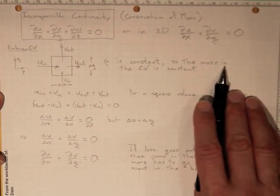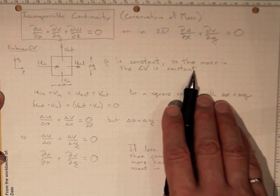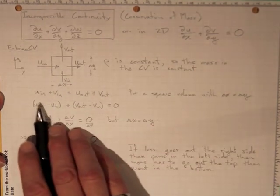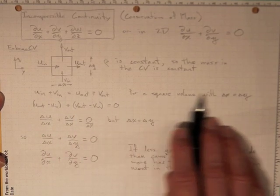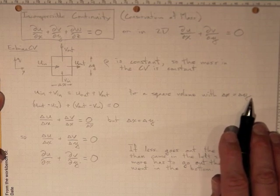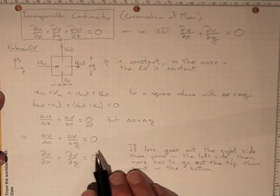This assumes constant density, so the mass in the control volume must be constant. If density isn't constant, this gets more complicated. So u_in + v_in = u_out + v_out. We'll work with a square volume where Δx = Δy, though we'd get the same result with any shaped control volume.